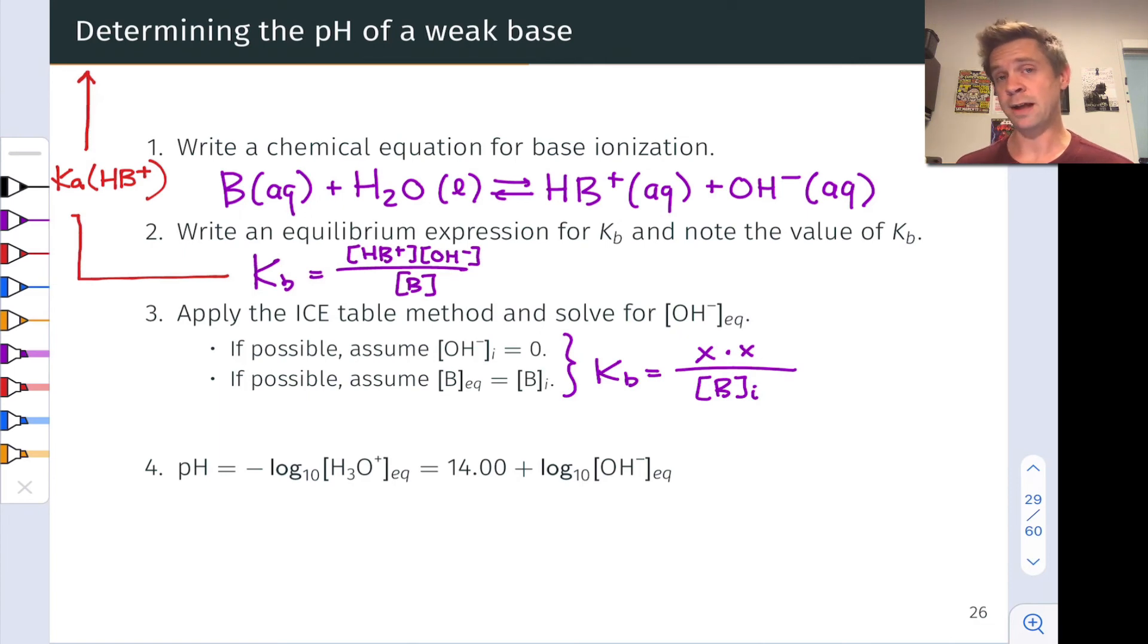And in the denominator, rather than having the initial molarity of B minus X, we simply have the initial molarity of B in the denominator. And again, we can solve for X, and this turns out to be the square root of Kb times the initial molarity of B, and this is equal to the equilibrium hydroxide concentration.